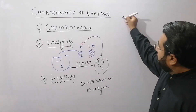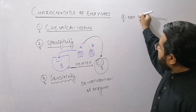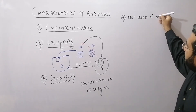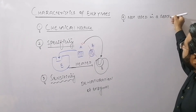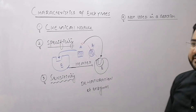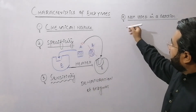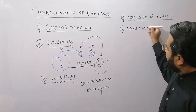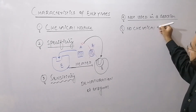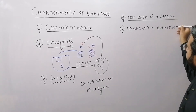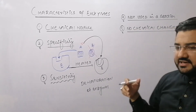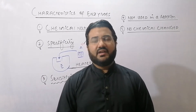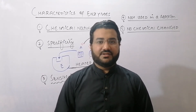The fourth feature is that, just like an ordinary catalyst, the enzyme is not consumed in a reaction. If an enzyme is used during a reaction, it is regenerated at the end of the reaction. Fifth, the enzyme itself is not chemically changed during the course of a reaction, though a physical change is possible — for example, the texture or color of the enzyme may change. The chemical nature of the enzyme before and after the reaction remains the same.